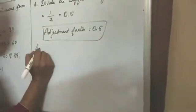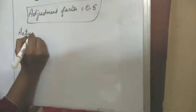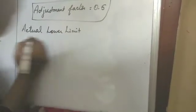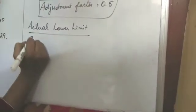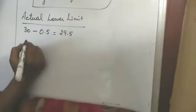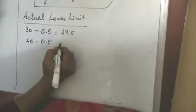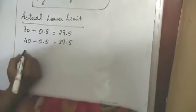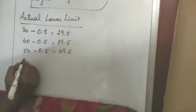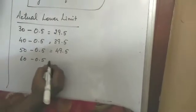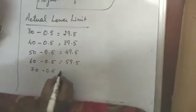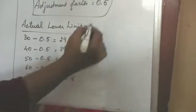Now you have to get actual lower limit. 30 minus 0.5, you will get 29.5. 40 minus 0.5, 39.5. 50 minus 0.5, 49.5. 60 minus 0.5, 59.5.